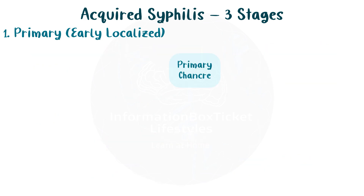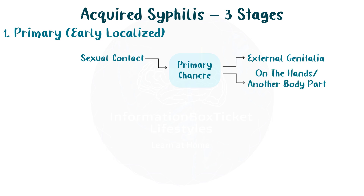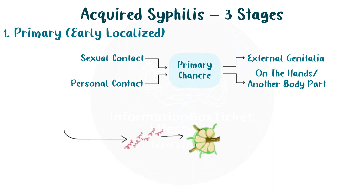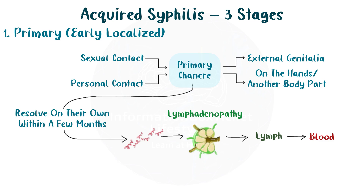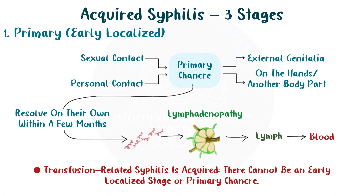The main chancre forms around the external genitalia in people who get syphilis through sexual contact. On the other hand, the main chancre may manifest on the hands or another body part in people who get syphilis by personal contact with a lesion or through some other method. Meanwhile, some spirochetes infect nearby lymph nodes and cause lymphadenopathy, or swelling of the lymph nodes. They then enter the lymph and finally the bloodstream. Normally, syphilitic chancres resolve on their own within a few months. If transfusion-related syphilis is acquired, there cannot be an early localized stage or primary chancre.